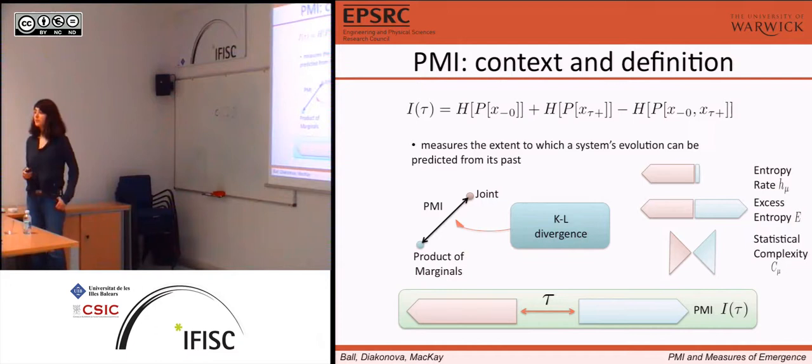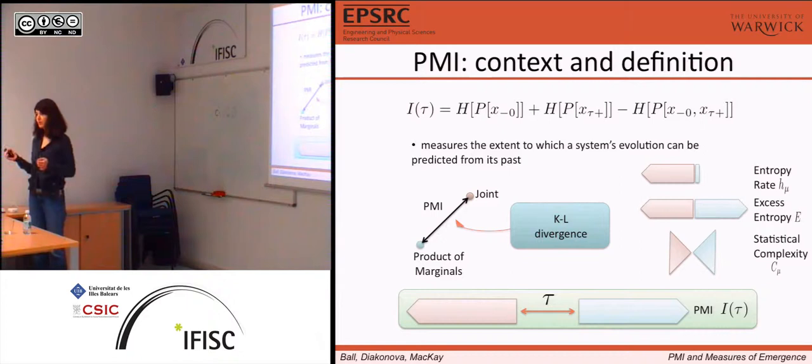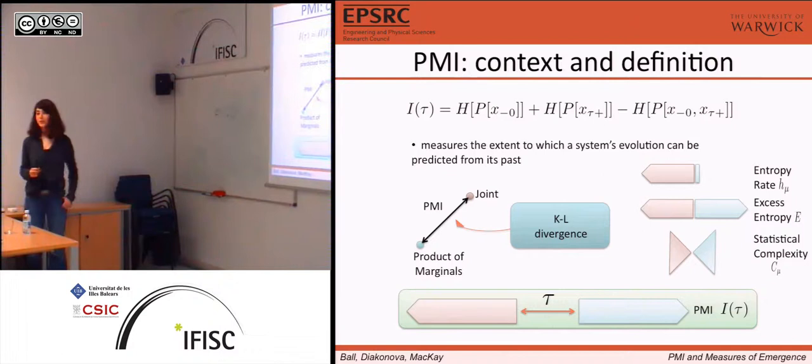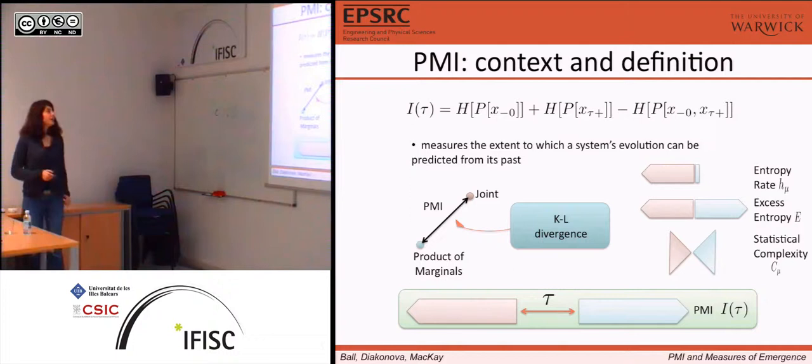Persistent Mutual Information is something quite specific. First of all, we have a flat distribution over all possible past configurations of some system. We evolve the distribution to get some future distribution. Then we look at the mutual information between these two distributions. When we say 'Persistent', we name the information that persists across some time gap — we can vary how large this time gap is. We will also talk about permanently persistent mutual information, i.e., something that the past knows about the future independent of how large you make the time gap.